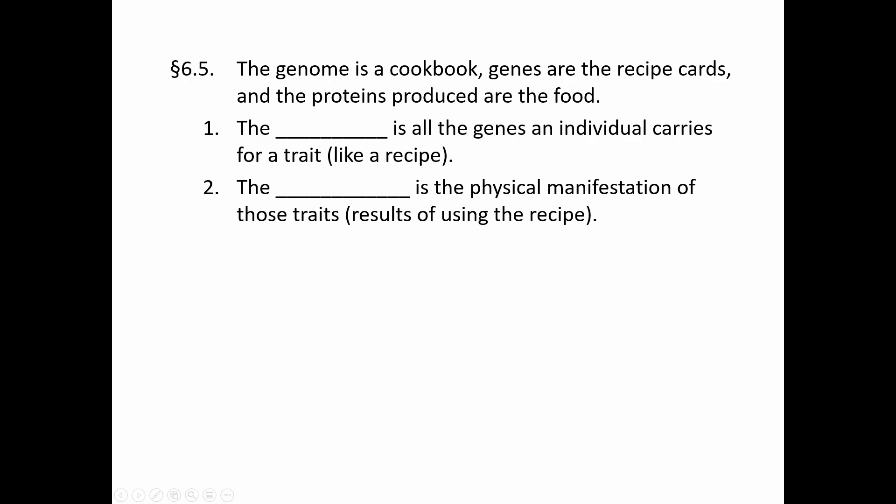The genome is like an entire cookbook, each gene is an individual recipe card, and the proteins produced are the food. The genotype is all the genes an individual carries for a particular trait — in humans, the two versions of that recipe in our cookbook. The phenotype is the physical manifestation of those traits, meaning what is the end result: what version of that recipe are we ultimately making?